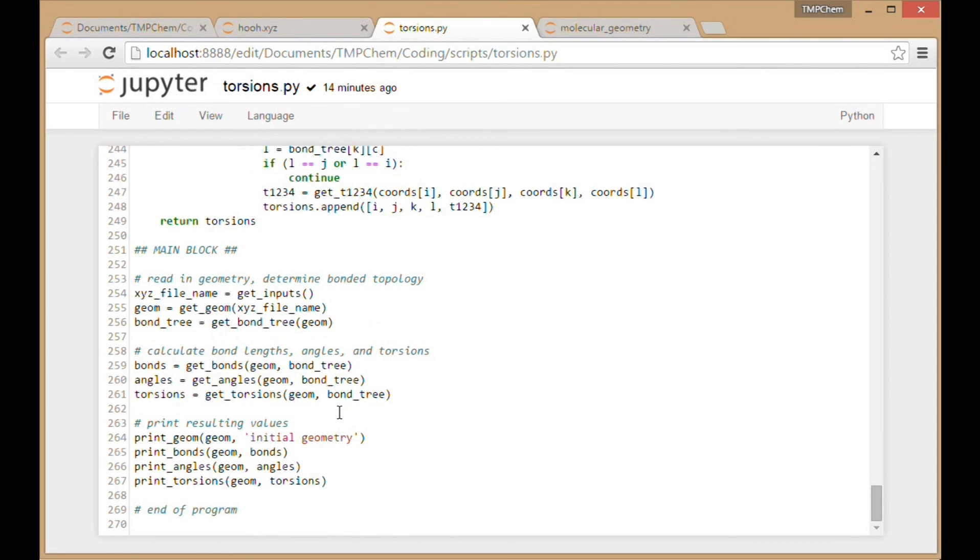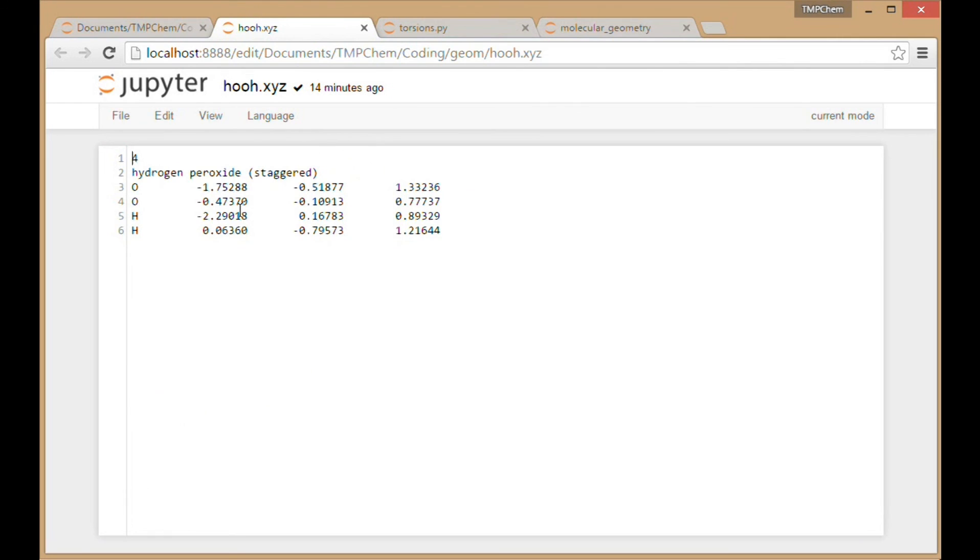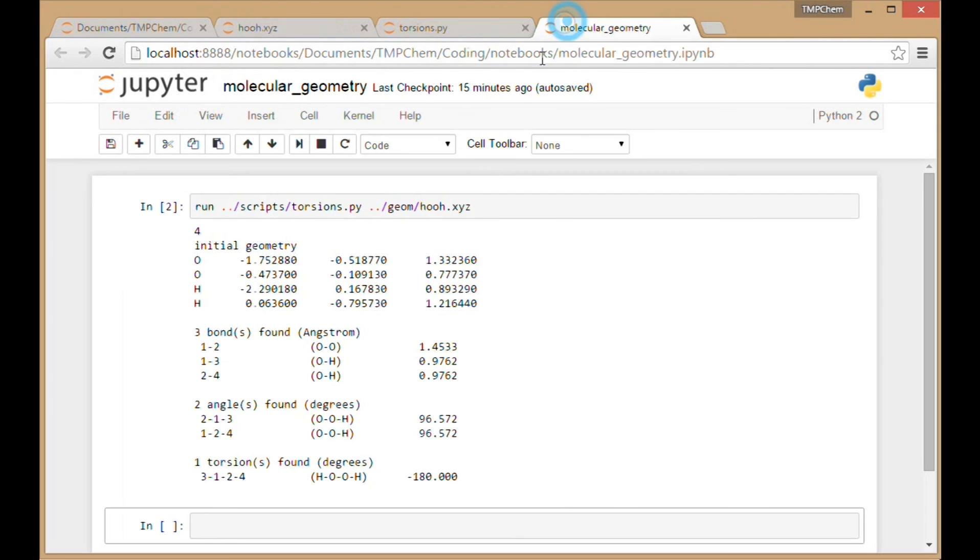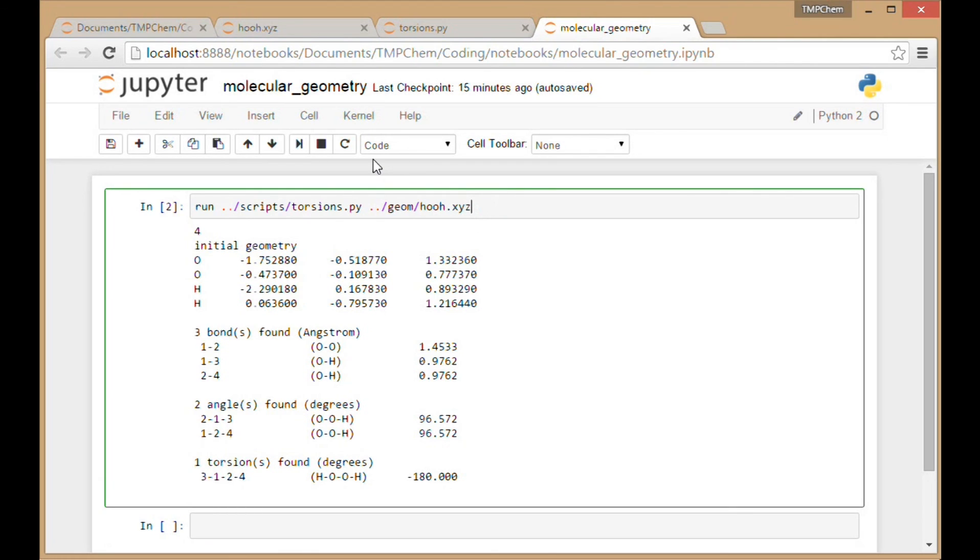And when we go to our main block, we've got just two new lines here, I believe. Getting the torsions from the geometry and the bond tree and printing out the value of those torsions. So we can run this program on our hydrogen peroxide on our H2O2 in our XYZ file. So going over here, now I've changed this to torsions.py to run and to HOOH.xyz. I can run that here. You can see I've already run it, but let's just hit shift enter and run it again for good measure.